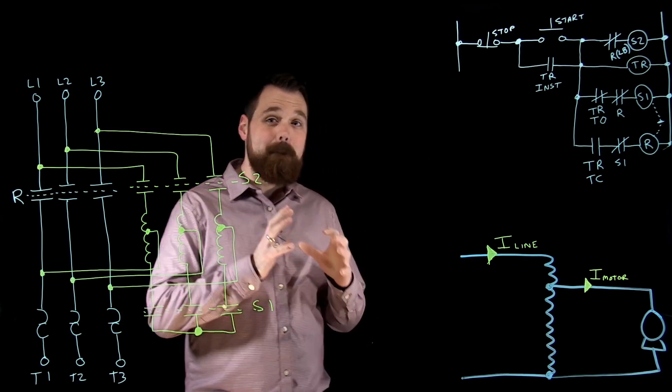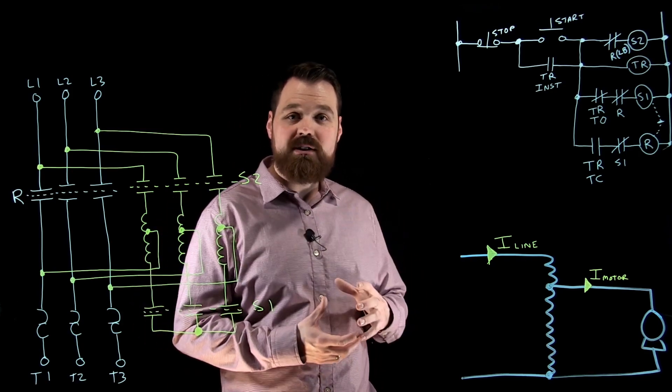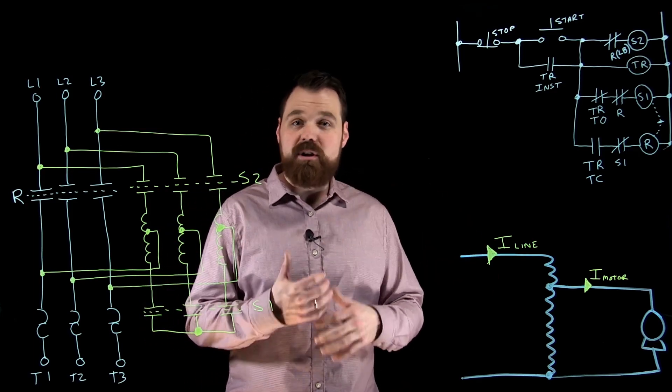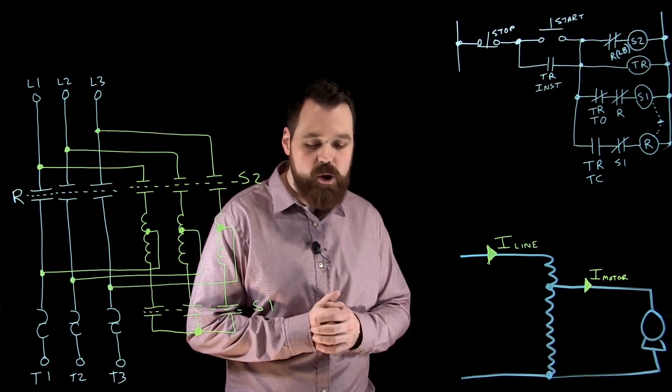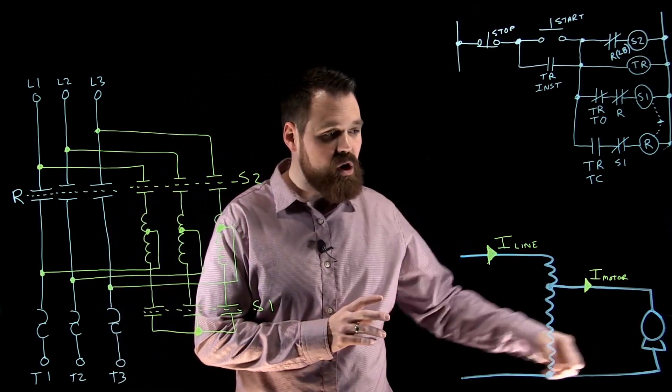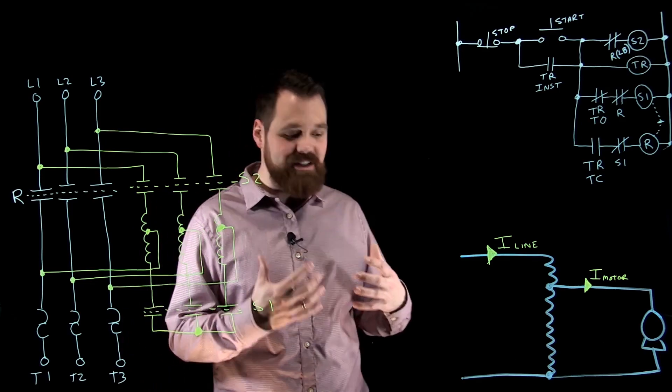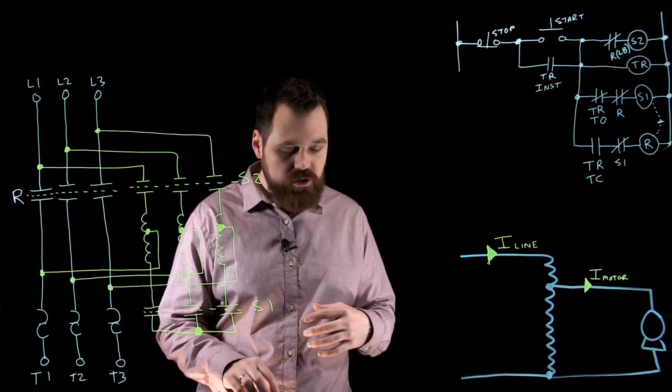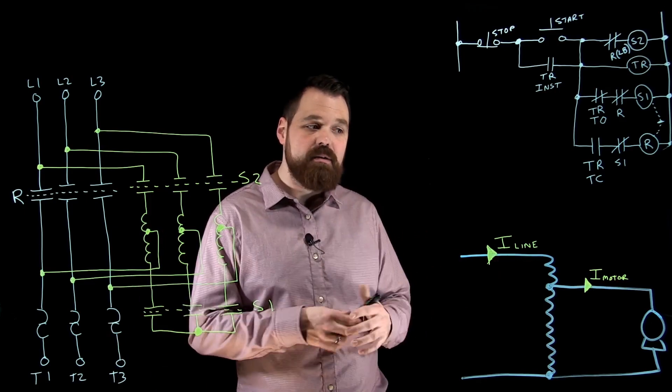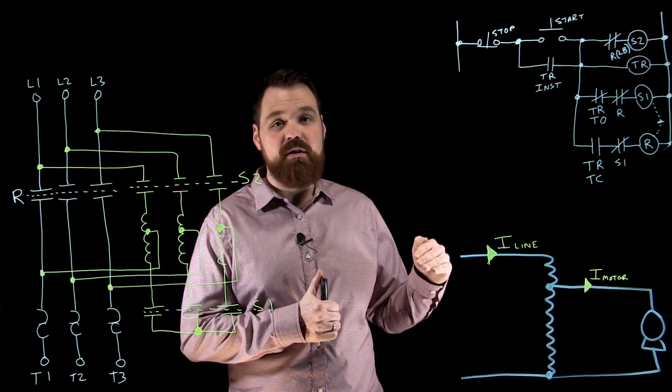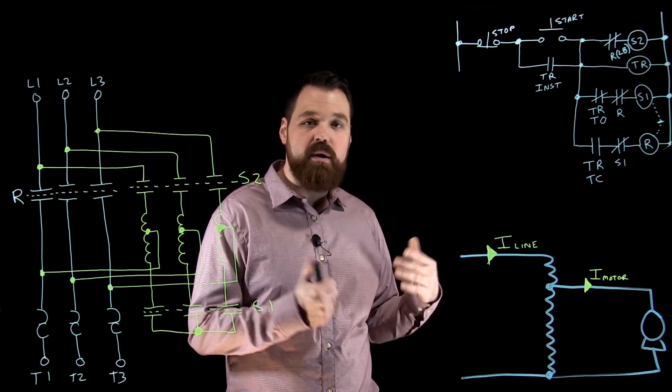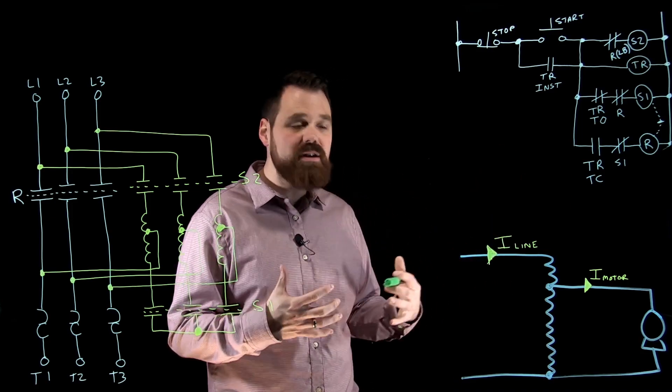I want to talk about the basics of how an autotransformer starter works and then get into the sequence of operations. They're a little tricky to grasp, so I want to look at a basic autotransformer as an example. The general idea is that if I can bring my voltage down at motor start, that will bring the current down.